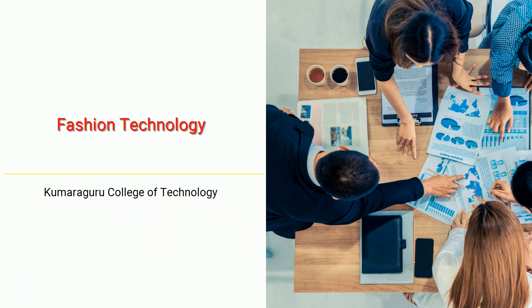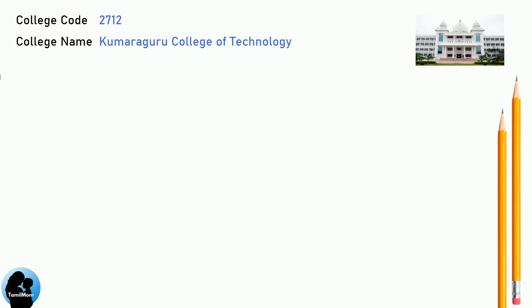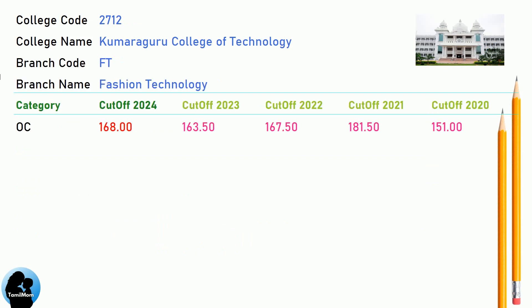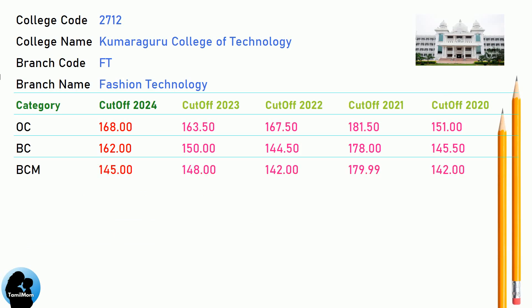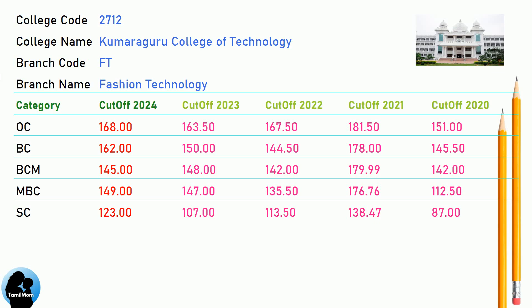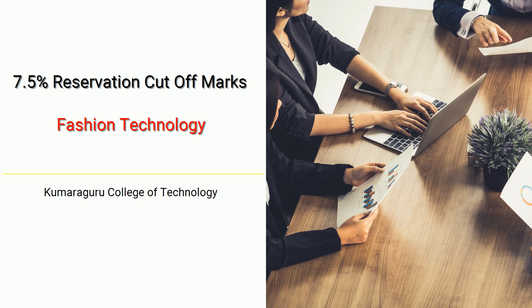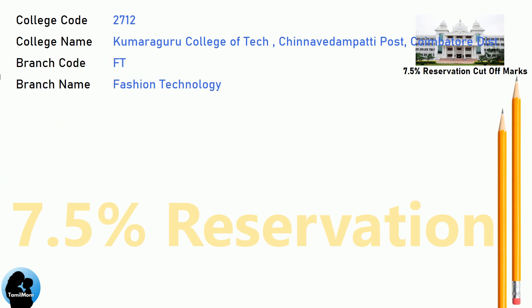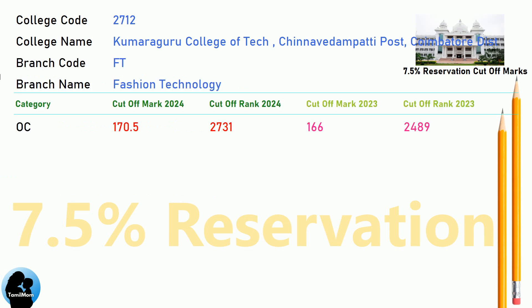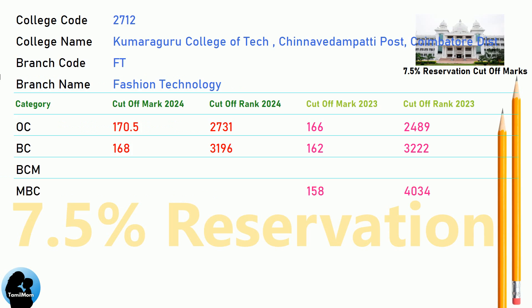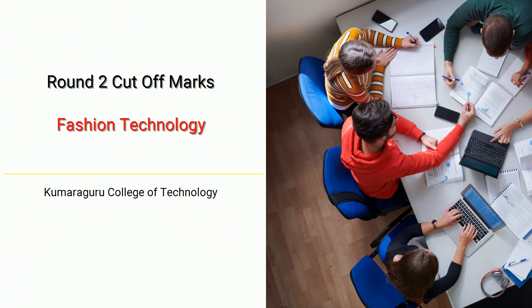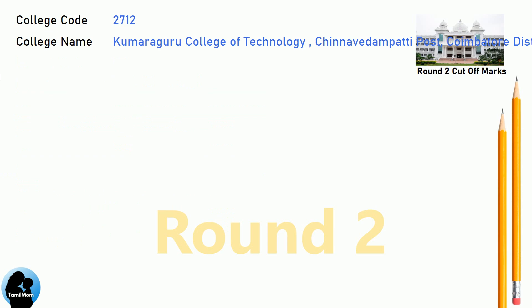DNEA cutoff for Kumaraguru College of Technology in Fashion Technology. DNEA 7.5 Reservation cutoff and DNEA Round 2 cutoff for Kumaraguru College of Technology in Fashion Technology.